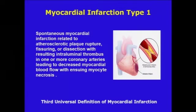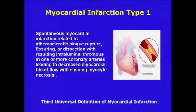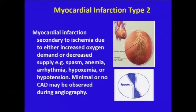The so-called Type 1 MI is a spontaneous infarct related to atherosclerotic plaque rupture, fissuring, or dissection, with resulting intraluminal thrombus development in one or more coronary arteries that leads to ischemia and myocyte necrosis.